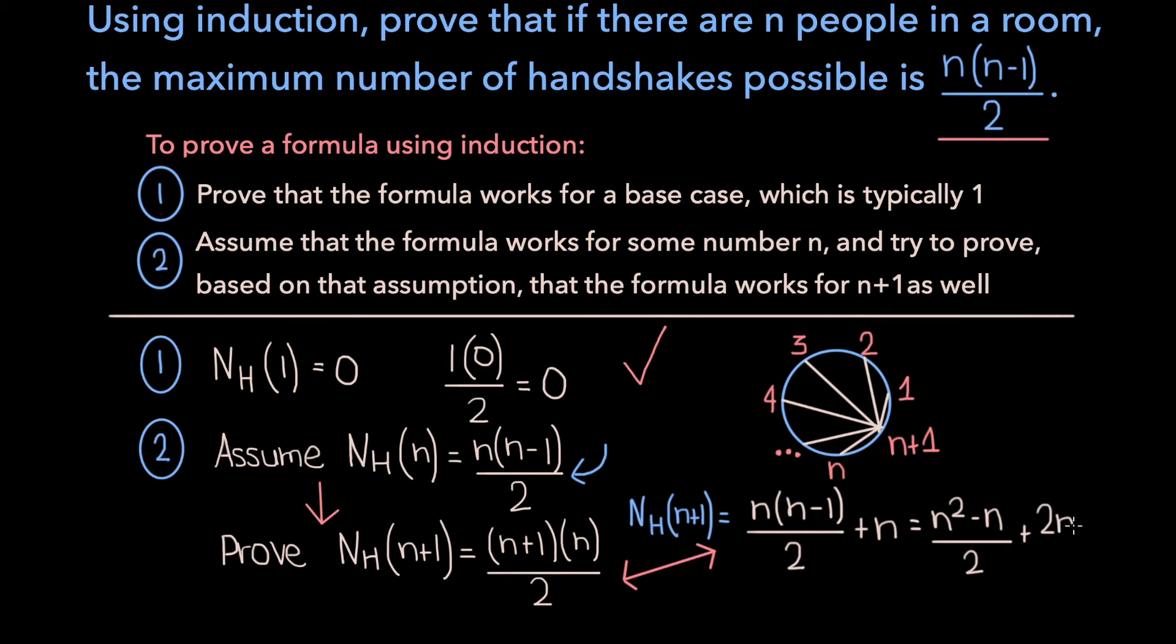So if we combine the terms now, we get n squared minus n plus 2n, which is just plus n over 2. And if we simplify this just one step further by factoring out the n, we get n times (n+1) over 2.